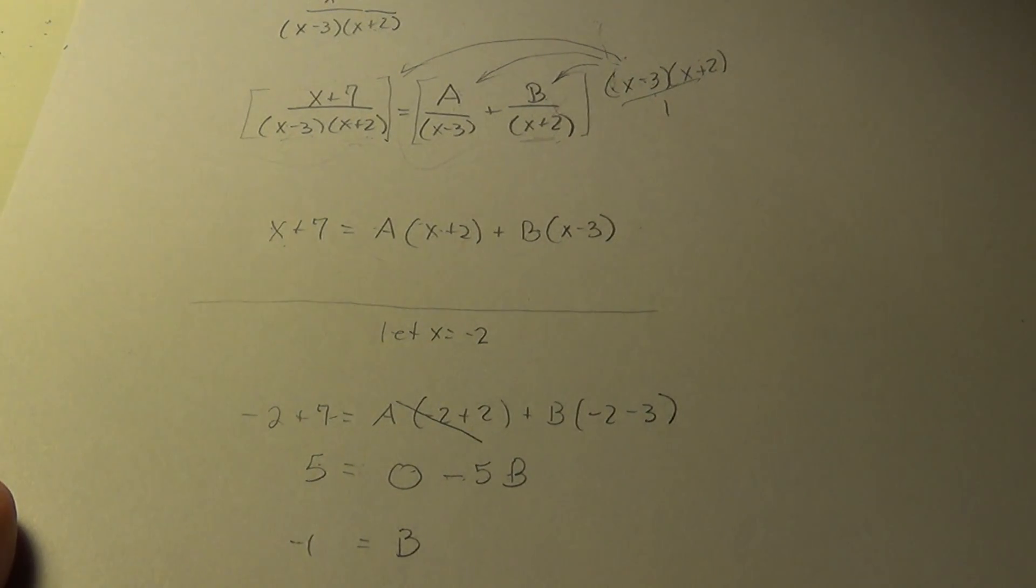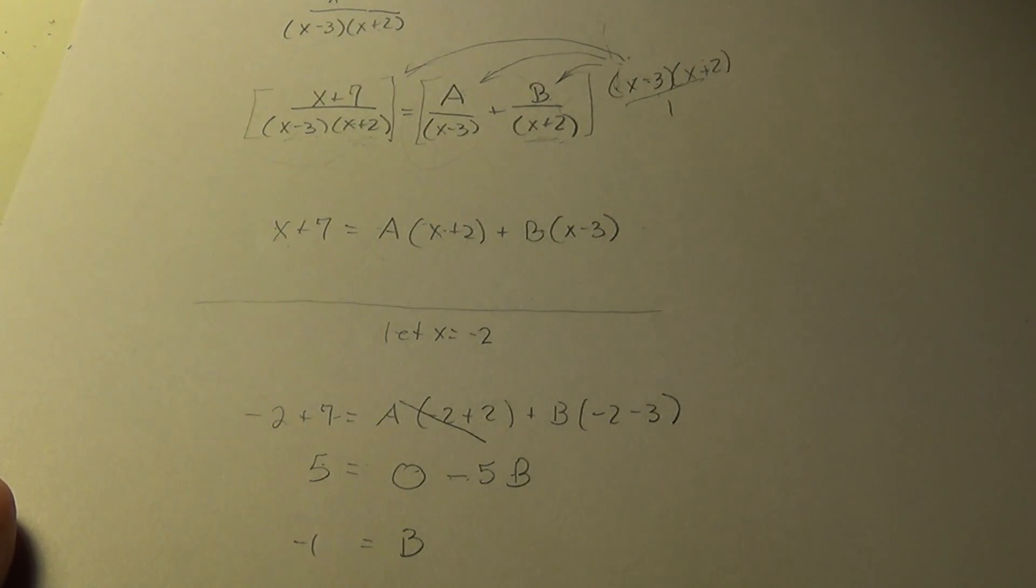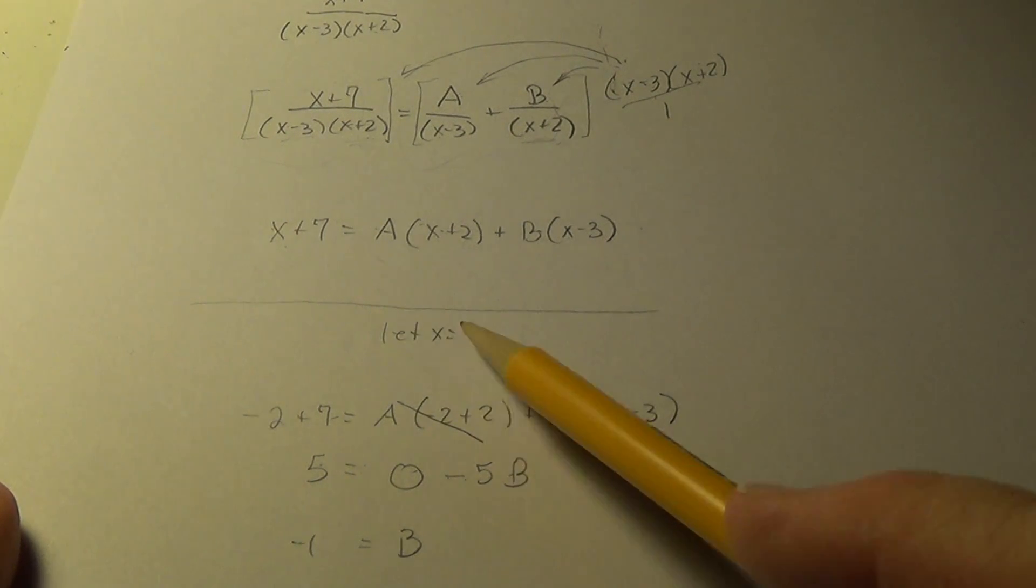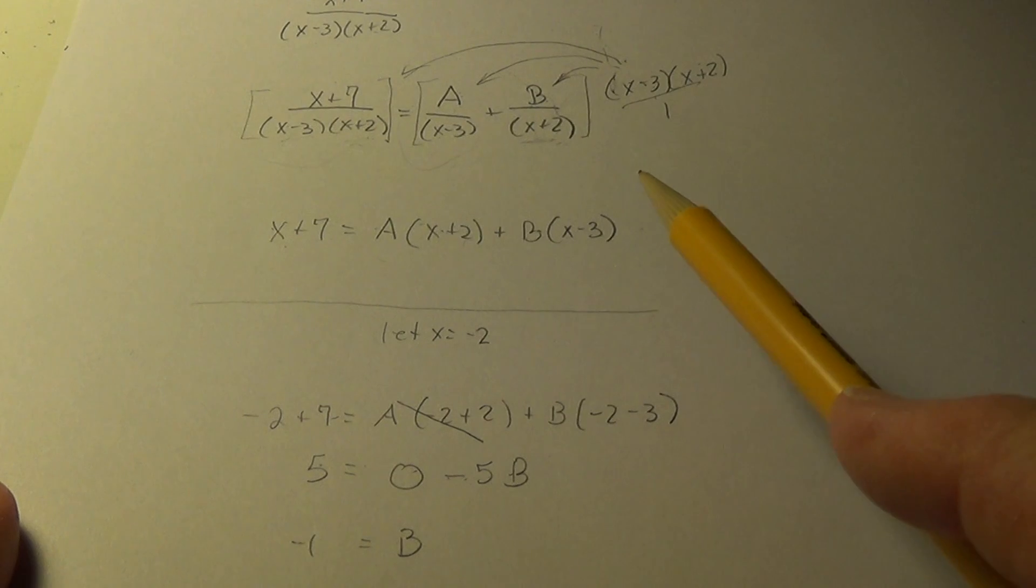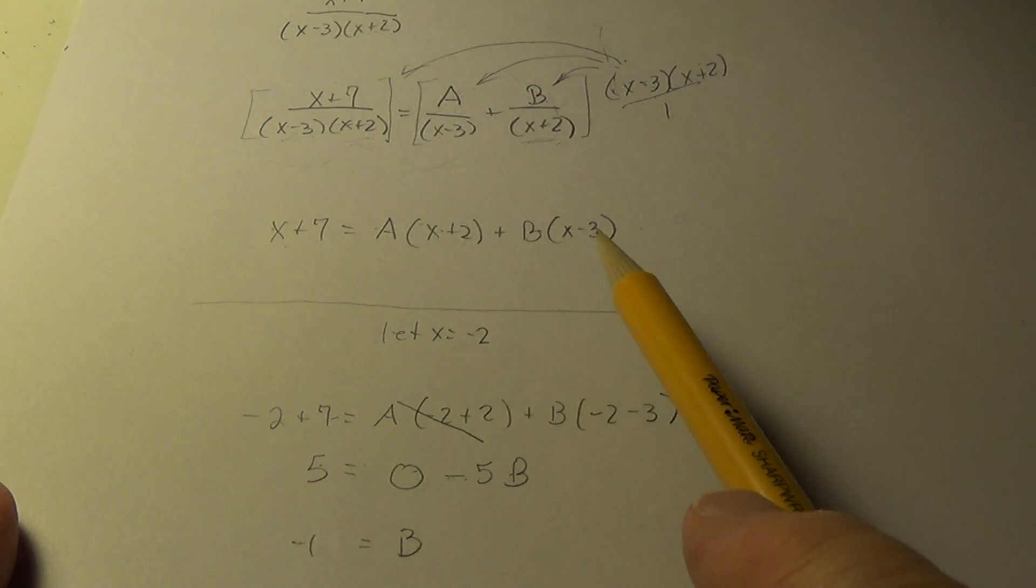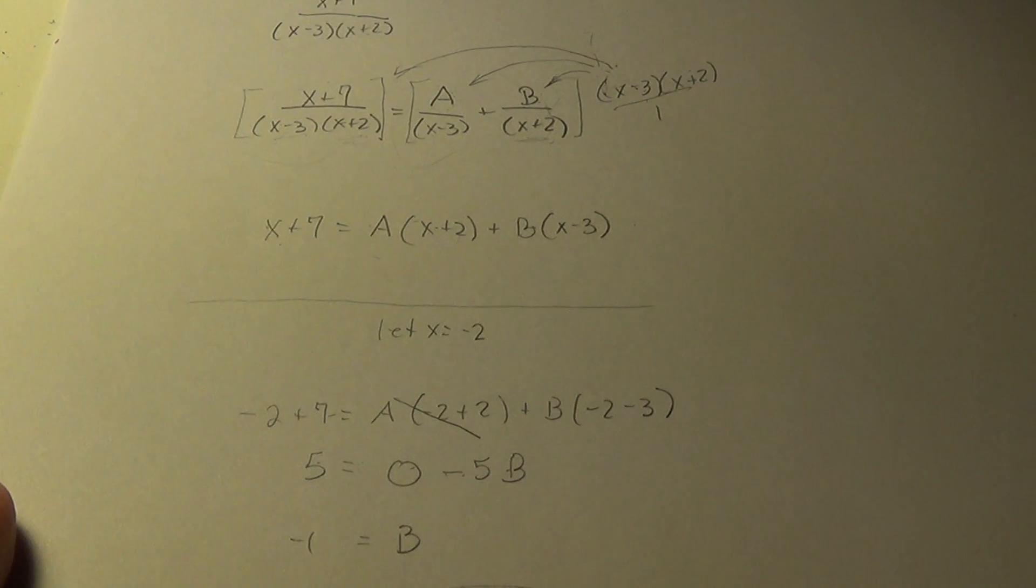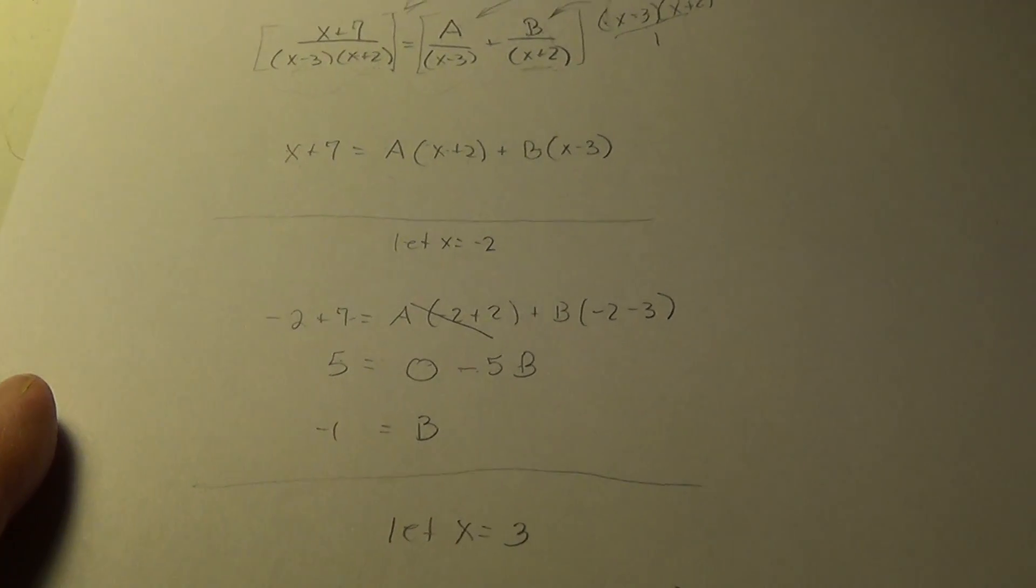So when it comes to b, case closed. So now, let's play the let game again. It's so fun. So let x equal minus 2 is our first game. Let us look here and see what would help us find a this time. We can find a by letting x equals something that would zero out b. So I'm going to let x equal 3. Let x equal 3.